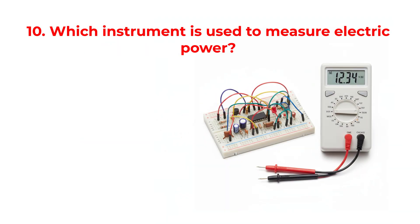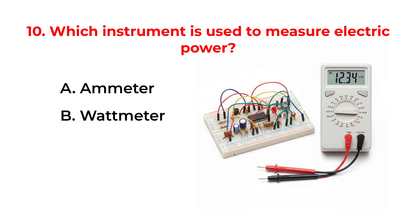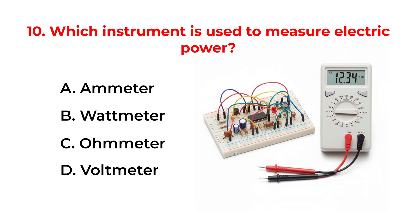Which instrument is used to measure electric power? A. Ammeter. B. Wattmeter. C. Ohmmeter. D. Voltmeter.